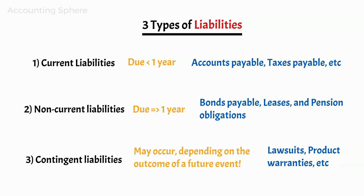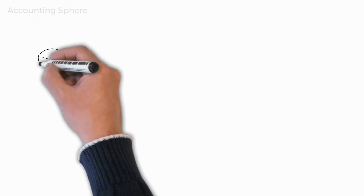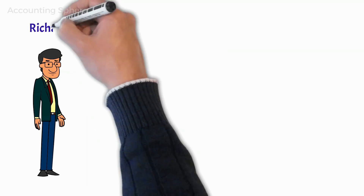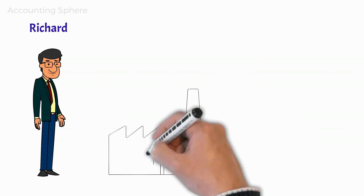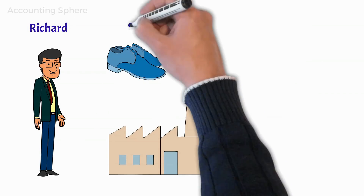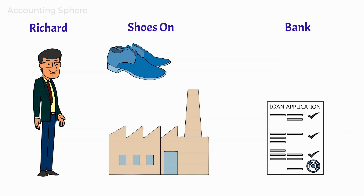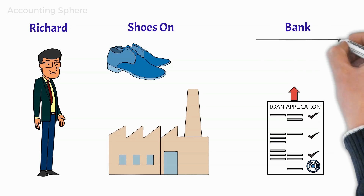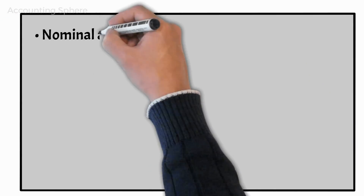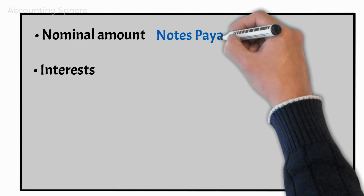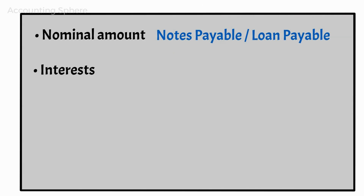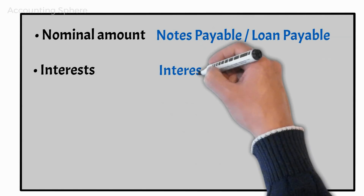Let's imagine that Richard, an active and successful entrepreneur in his region, decided to add to his group company's portfolio a shoes factory named Shoes On. In order to finance his factory, he received a loan from his bank. The loan is divided between a nominal amount and interests, and both are in fact liabilities to be recorded in the balance sheet. The nominal value of the loan will be recorded as notes payable or loan payable, and the interest on the loan he owes will be recorded as interest payable.